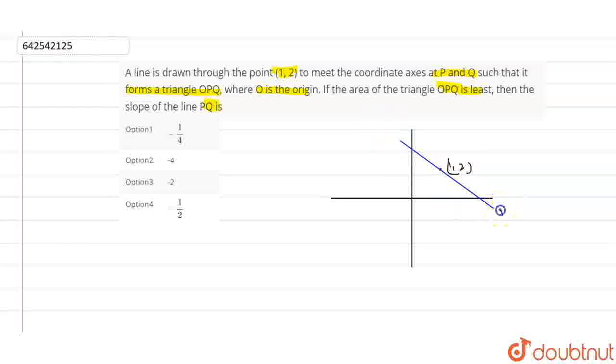So this is a line which is having a slope of m. And these are the intercepts. This is our origin O, 0, 0. And suppose this point is P and this one is Q. And what is given to us in the question? That these points are passing through 1, 2.